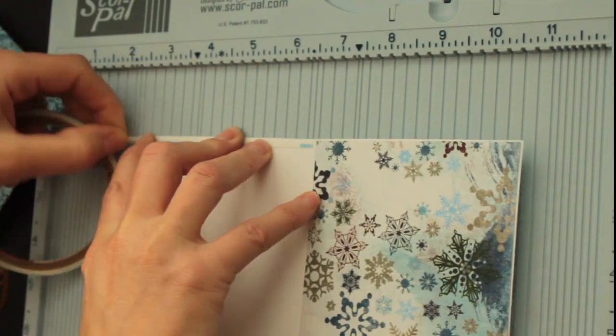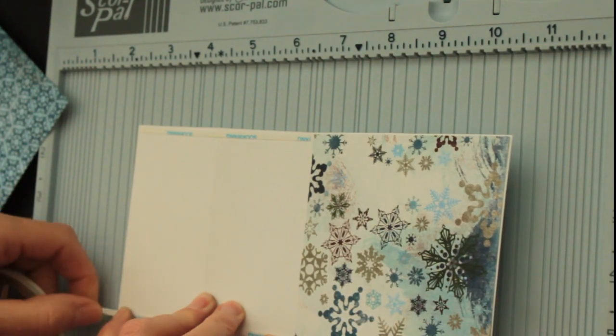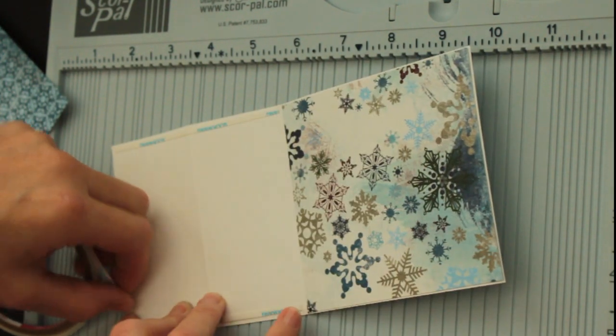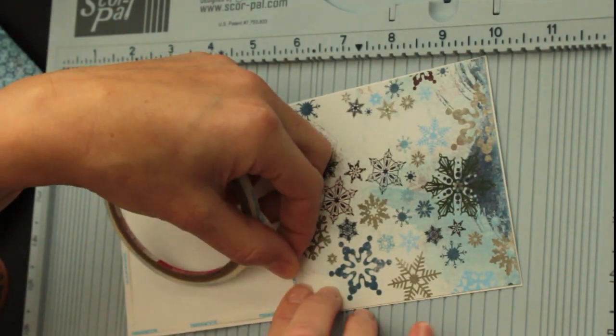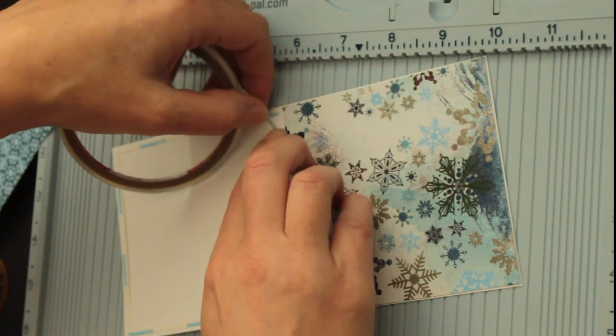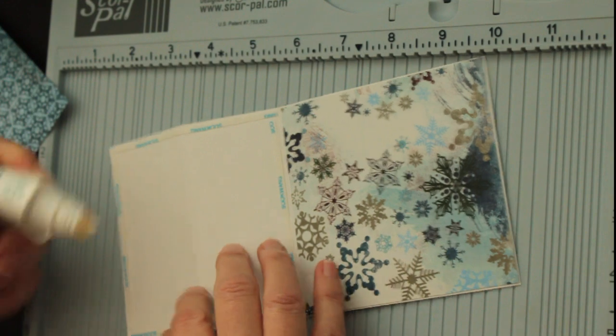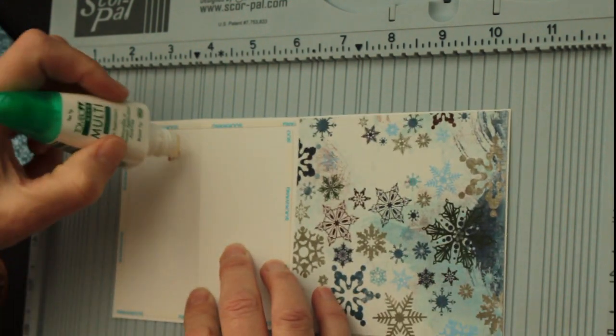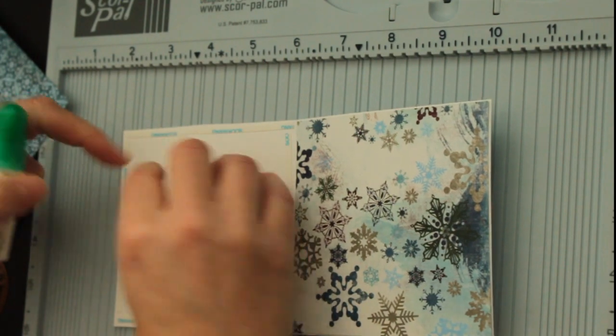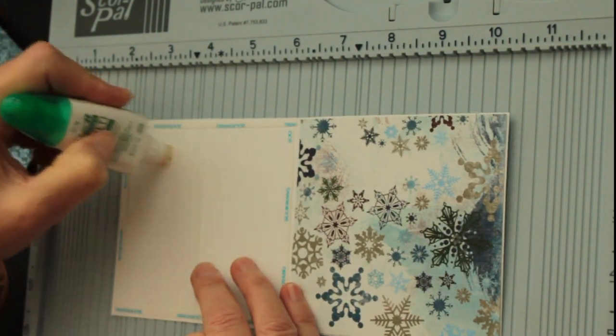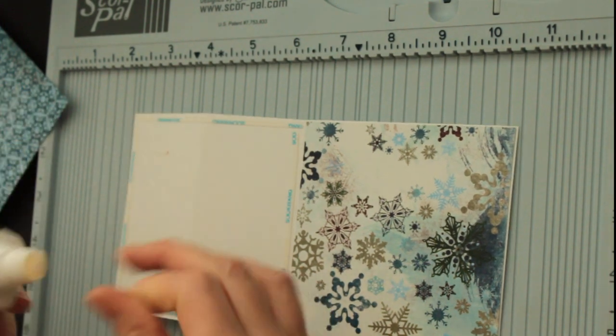So now I just have to find it. First, I add adhesive like I did on the other side, and then I just add some more liquid adhesive on this side. Oops, there's some nastiness on my glue.